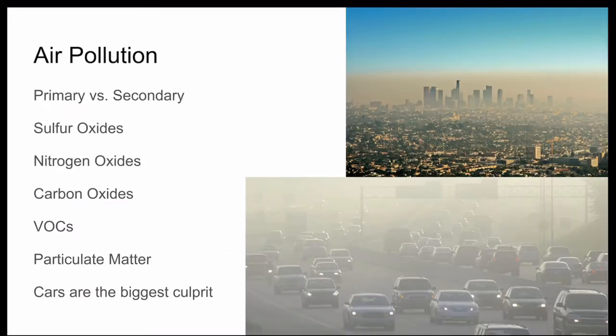There are many different substances that can build up in the air to unhealthy levels. Scientists classify them as either primary or secondary pollutants. Primary pollutants are put directly into the air — for example, soot from smoke.